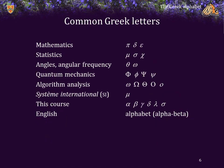Some of the more common Greek letters that you will or have used include: in mathematics, pi, delta, and epsilon; statistics uses mu, sigma, and chi; angles and angular frequency are represented by theta and omega; quantum mechanics uses phi and psi as wave functions; and in algorithm analysis, omega, big theta, big omega, big O, and little o are used.